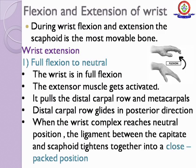Flexion and extension of the wrist: during wrist flexion and extension, the scaphoid is the most movable bone. For wrist extension, starting from full flexion to neutral — the extensor muscles get activated, pulling the distal carpal row and metacarpals. The distal carpal row glides in the posterior direction. When the wrist complex reaches neutral position, the ligament between the capitate and scaphoid tightens together into a closed pack position.